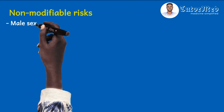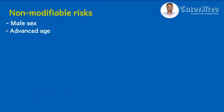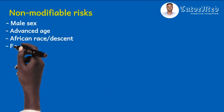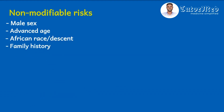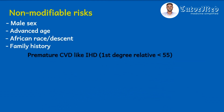Non-modifiable risk factors include male sex, advanced age typically above 65, African descent or race, and family history — particularly premature cardiovascular disease like ischemic heart disease in any first-degree relative less than 55 years old. The first-degree relative here can be a sibling or parent.